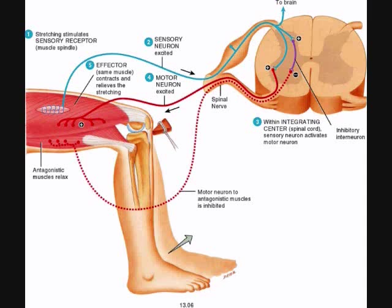Reflexes enable the body to make very rapid adjustments to changes in the internal or external environment. They're very predictable, and therefore they can give us very useful information about the state of our nervous system. For example, if you have a diminished reflex in the patellar ligament, which is a quadricep reflex, you can trace that reflex arc back to a very specific spinal nerve and level of the spinal cord. If that reflex is not functioning properly, you can make a reasonable assumption that there may be a disruption in nerve impulse conduction along that path, helping to diagnose an injury or condition. Reflexes are very valuable in that way.